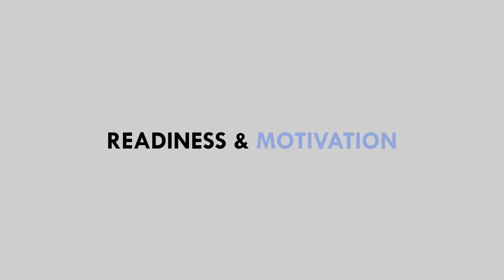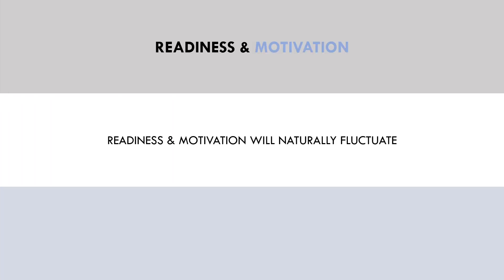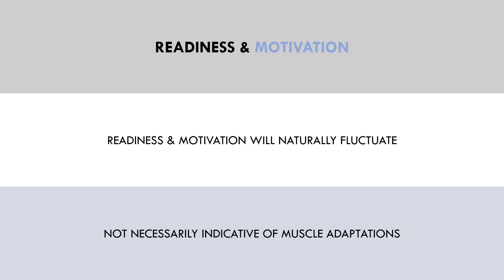The last primary factor which may influence performance without necessarily influencing muscle stress is readiness and motivation. Naturally, we feel more or less excited and motivated to train on different days. Some days we may feel tired due to external stress or poor sleep and aren't as ready to push hard in the gym. Other days we feel great, take some pre-exercise caffeine, and feel pumped for our session. As a result, we may see performance fluctuations from session to session. Our performance is more likely to be better when readiness is greater, and worse when readiness is lower — and this is not indicative of muscle adaptations, just short-term fluctuations in motivation and readiness.